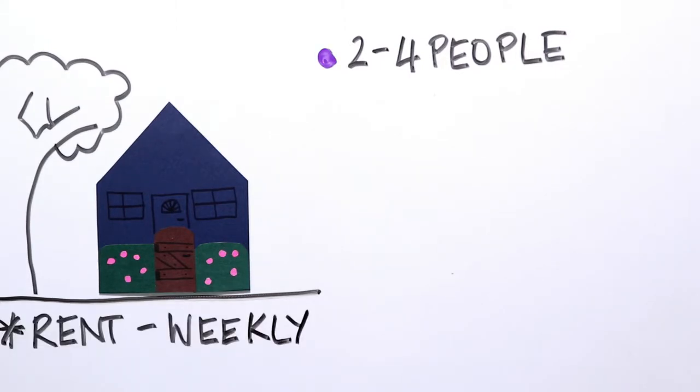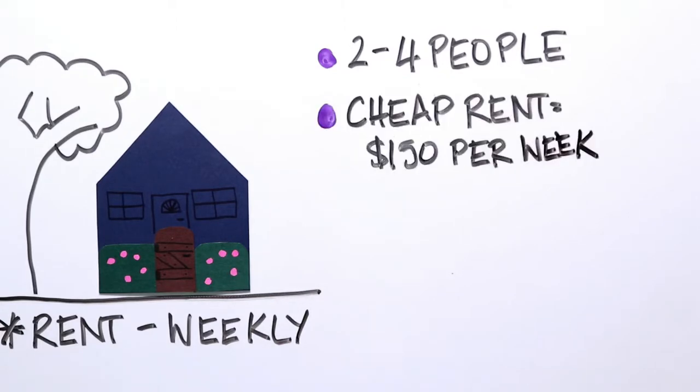Rent prices are given per week in New Zealand, not per month. And for one room in a shared house or apartment, the cheapest you'll probably find anywhere is about $150.00 a week, including internet and power.